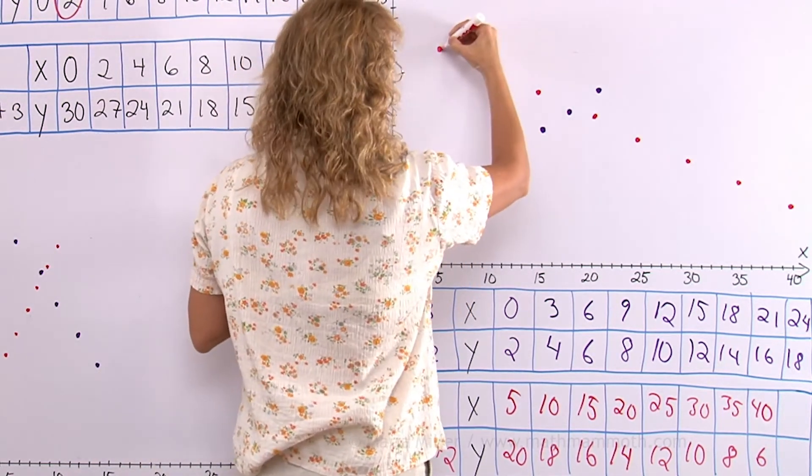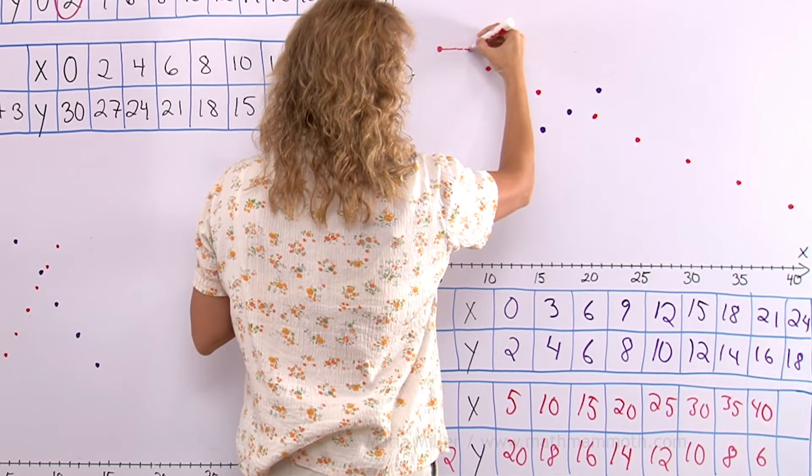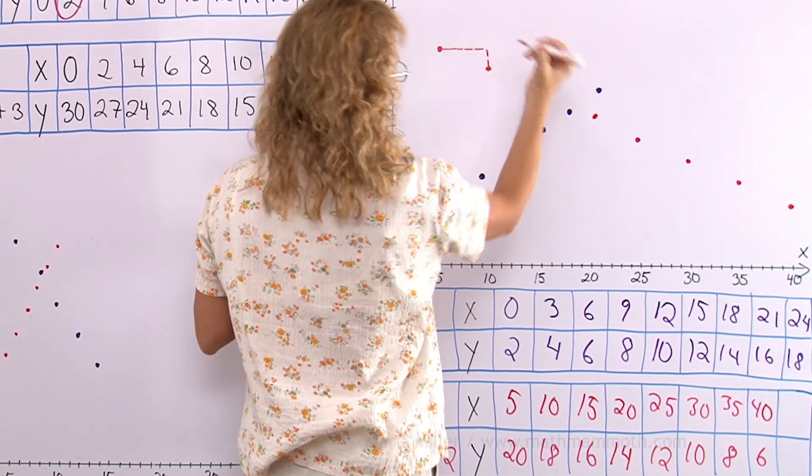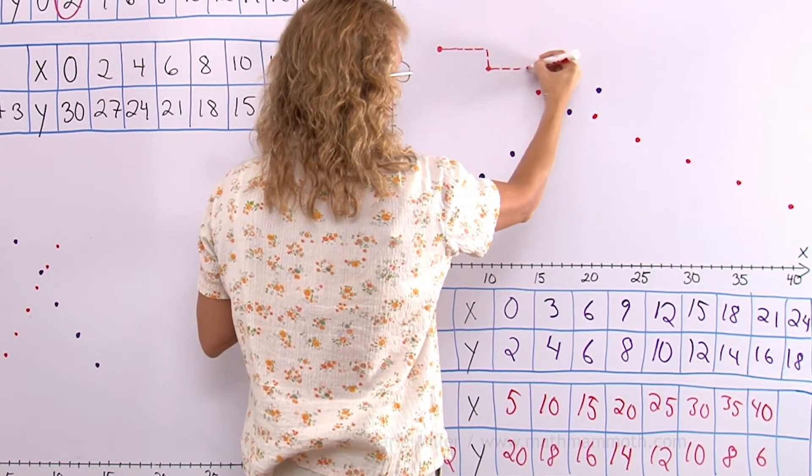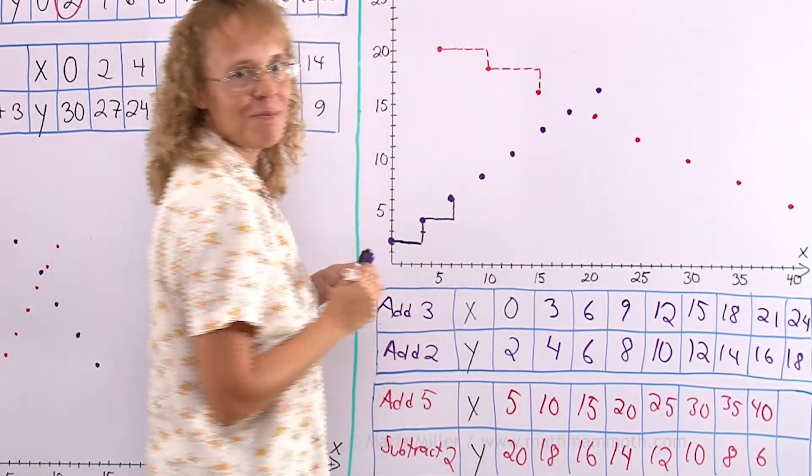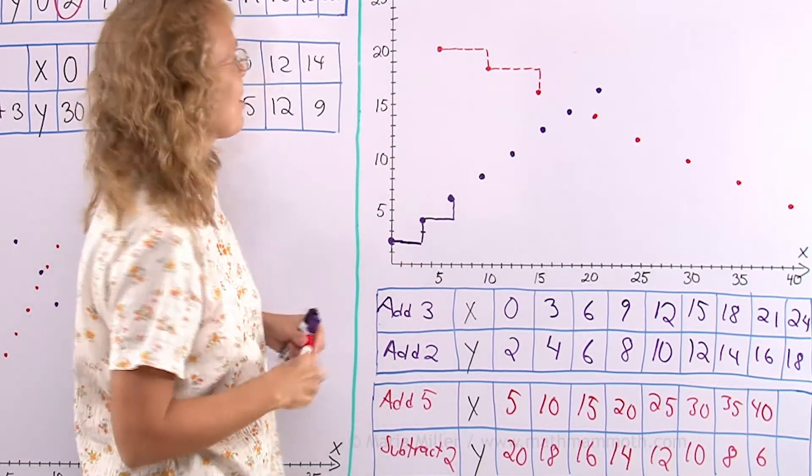I'll show it here again. Add 5 each time I go 5 units this way, and 2 down. 1, 2, 3, 4, 5, and 2 down. It would create a staircase going down.